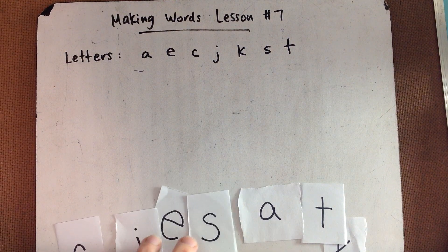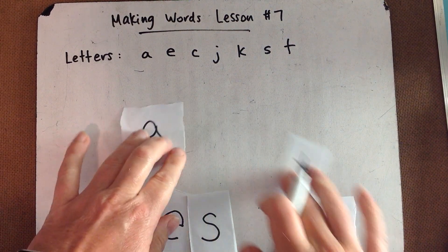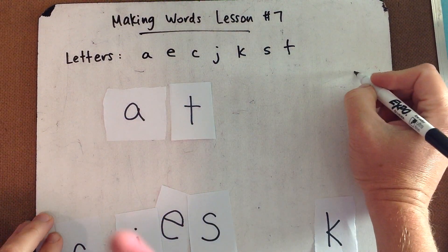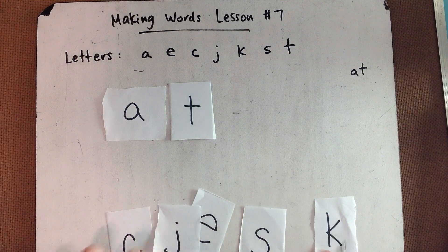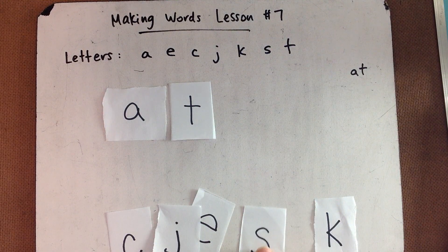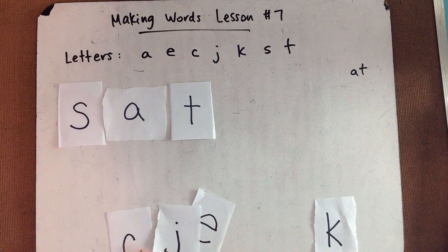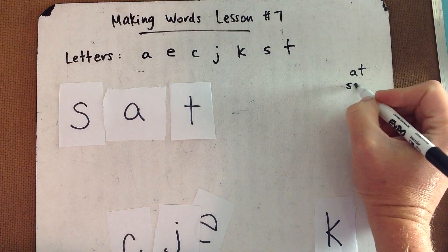We'll start easy with a two-letter word, at. From here in the at family there's so many different words you can make. For example, if you know how to spell at, can you spell sat? All you have to do is put the S in front. Sat.